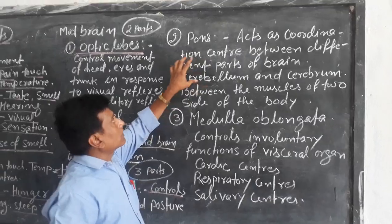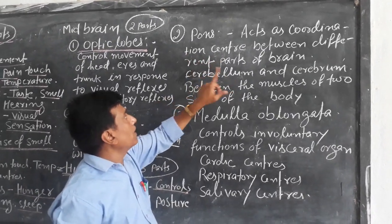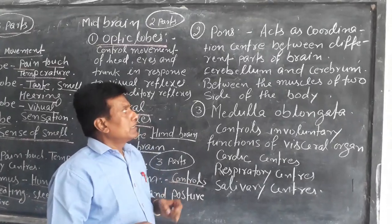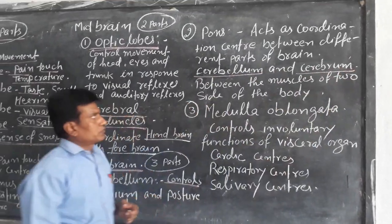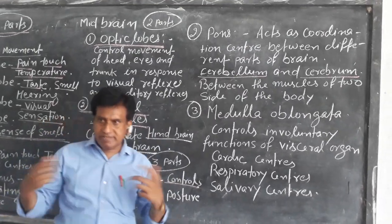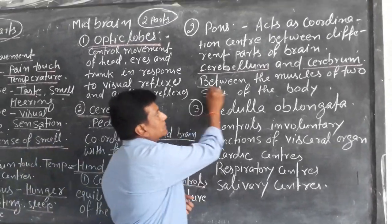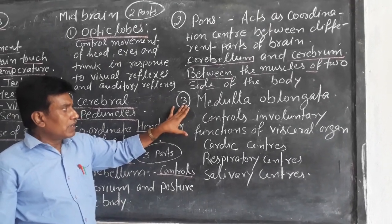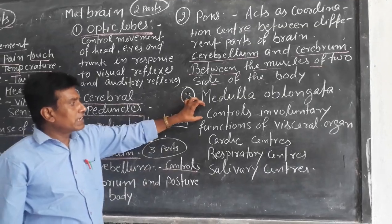The second part, the pons, acts as a coordination center between different parts of the brain. It coordinates between the muscles of the two sides of the body. The third part is the medulla oblongata, and it is responsible for involuntary functions — it controls the involuntary functions of the vital organs.